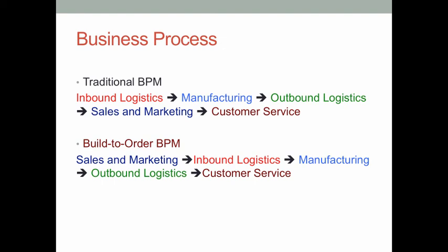The first problem is that the traditional business process brings a large number of overhead costs. Before IBM and HP get any sales revenue, they have to invest heavily in buying raw materials and building warehouses. The second problem is that the traditional business process did not consider what the customer really wanted in the early manufacturing process. IBM and HP assumed what they produced was what customers wanted, but there was a very high chance customers didn't want what was manufactured at all.